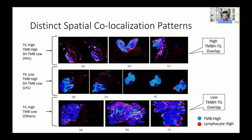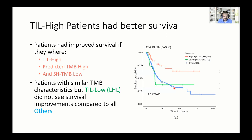We found that the TIL-high, TMB-high, and low heterogeneity group had a higher survival rate than patients with similar TMB characteristics but low TILs and other groups.